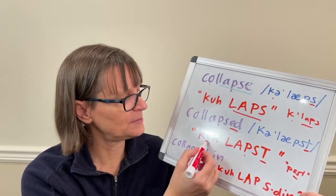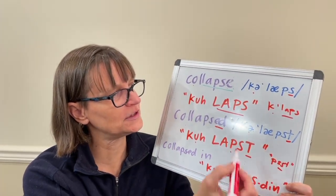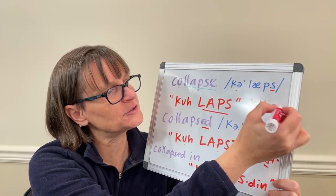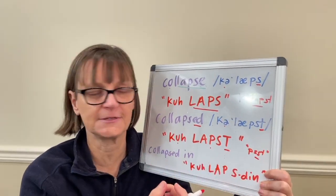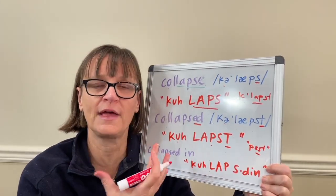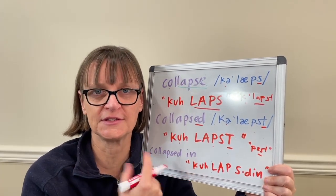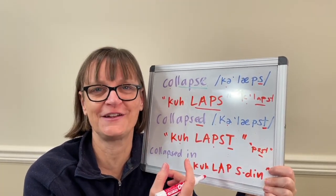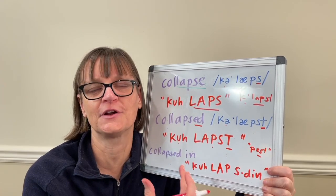Same pronunciation for the first part of the word — we just have that short little schwa. So you can think about it this way: collapse... collapsed. But when we use this in a sentence, how we pronounce that final T depends on what comes after.